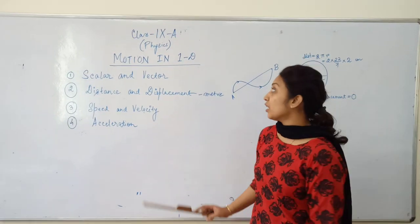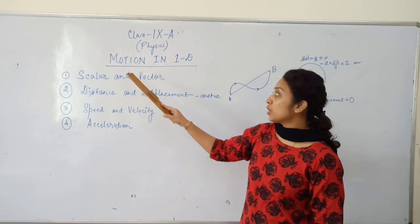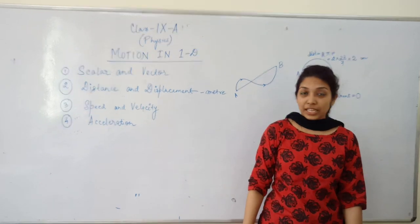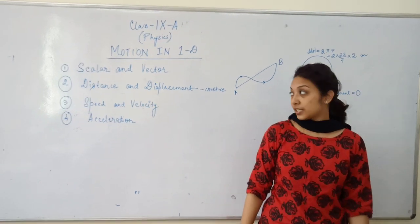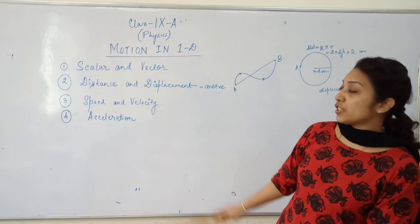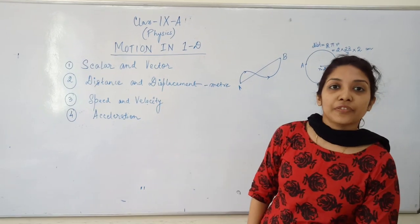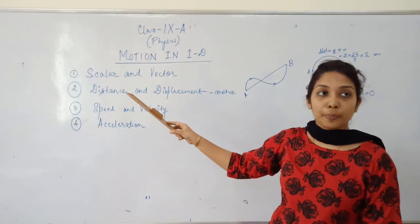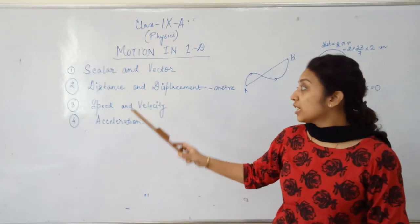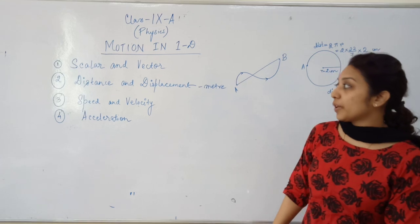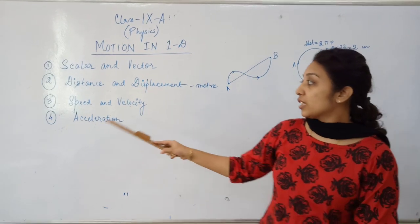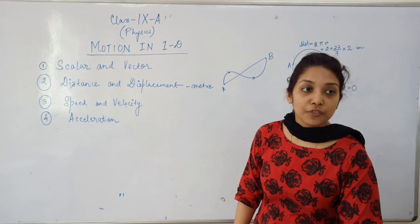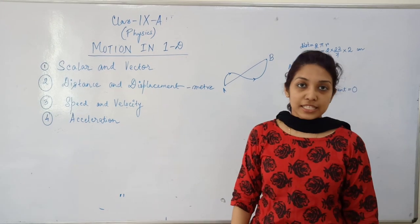Today we are going to start with a new chapter: Motion in One Dimension for Class 9A Physics. This chapter is divided into four subtopics: the first is scalar and vector quantity, the second is distance and displacement, the third is speed and velocity, and the fourth is acceleration.